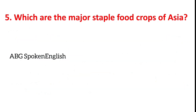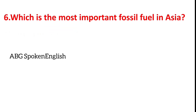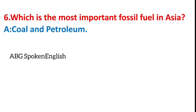Which are the major staple food crops of Asia? Rice and wheat. Which is the most important fossil fuel in Asia? Coal and petroleum.